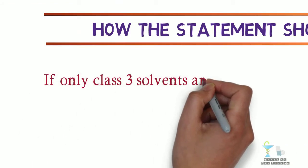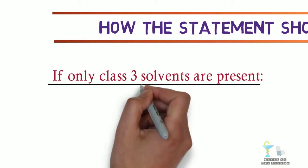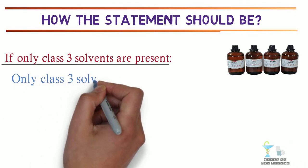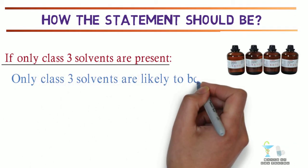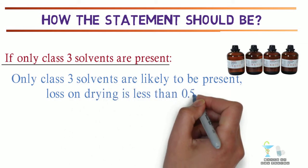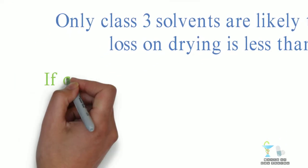If only class 3 solvents are present, then the statement should be: Only class 3 solvents are likely to be present, loss on drying is less than 0.5%.